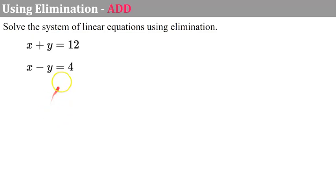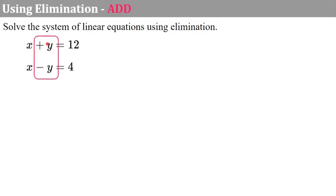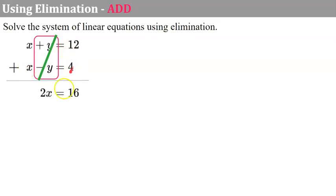Let's begin by solving one together. I'm going to solve this one using elimination and I'm going to add. Adding is my favorite method for elimination — I feel like there's less room for error, and if it's at all possible I add the two equations. But in today's video I will model both ways. I look and y has a coefficient of positive one and negative one — they're opposites. So if I add these equations together, this is a zero pair, leaving me x plus x is 2x and 12 plus 4 is 16. Divide both sides by 2 and x is equal to 8.